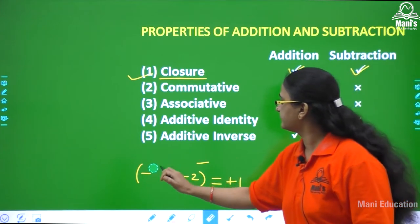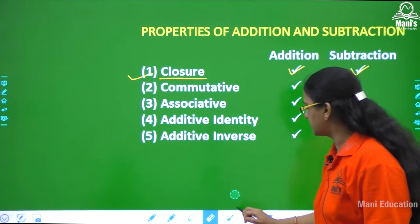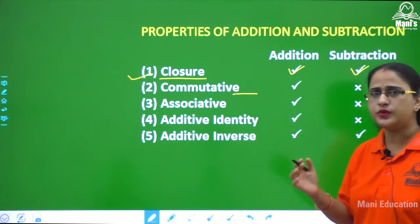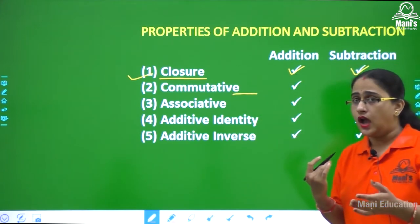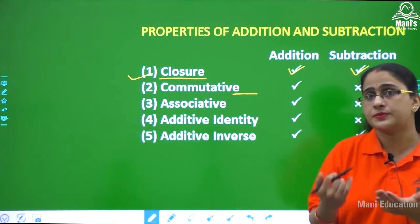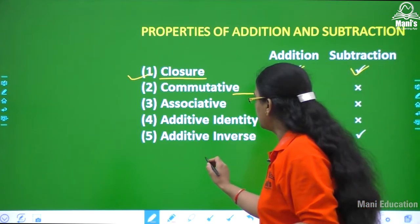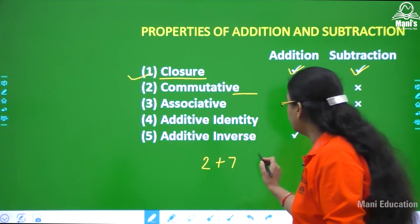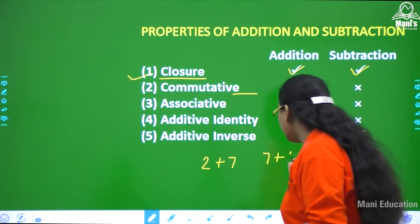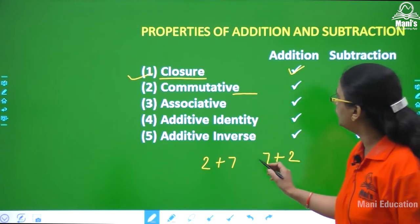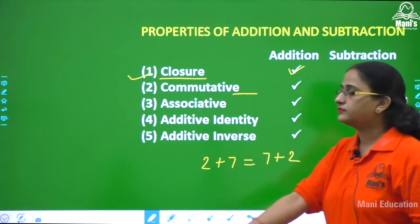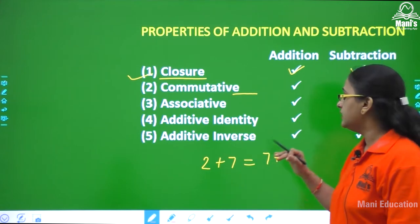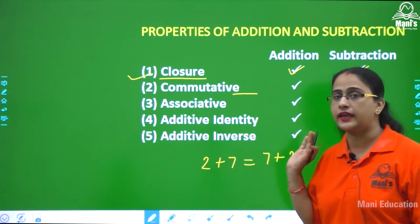Next is the commutative property. Commutative means that if 2 plus 7 is a certain value, then 7 plus 2 will also give the same value. Both will be equal — this holds for all integers, whether positive or negative.